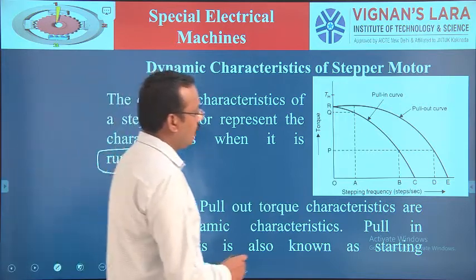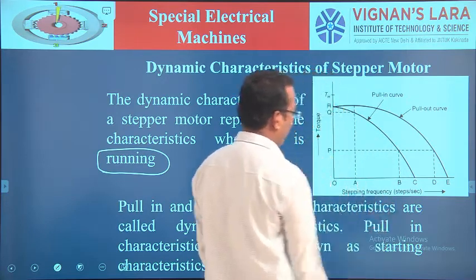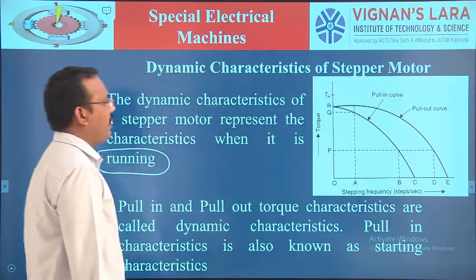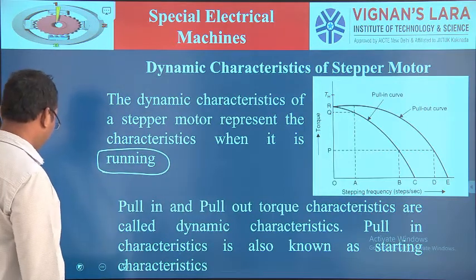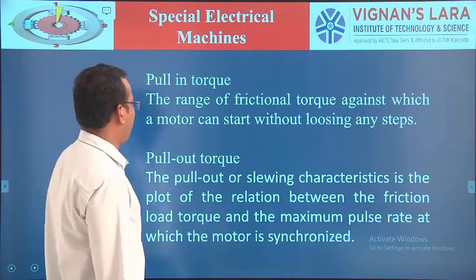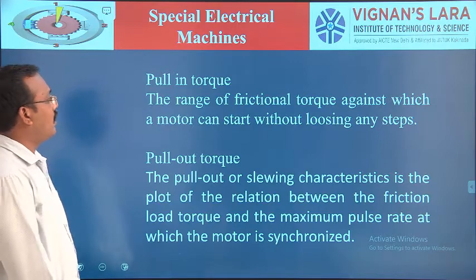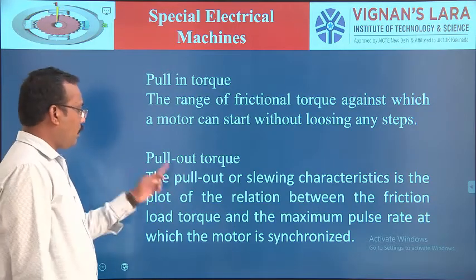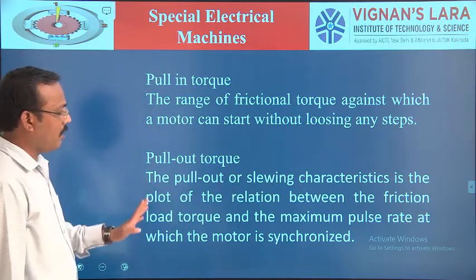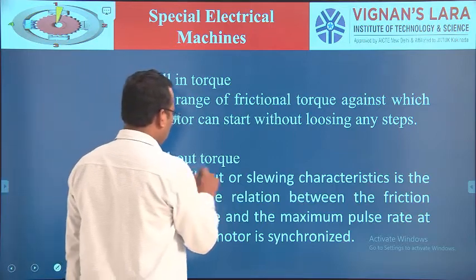Looking at the pull-in and pull-out characteristics of the stepper motor, we have torque versus stepping frequency as the dynamic characteristics. Pull-in torque is the rated axial torque against which the motor can start without losing any step. Pull-out torque (slewing characteristics) is the plot of the relation between the fraction of load torque and the maximum pulse rate at which the motor is synchronized.